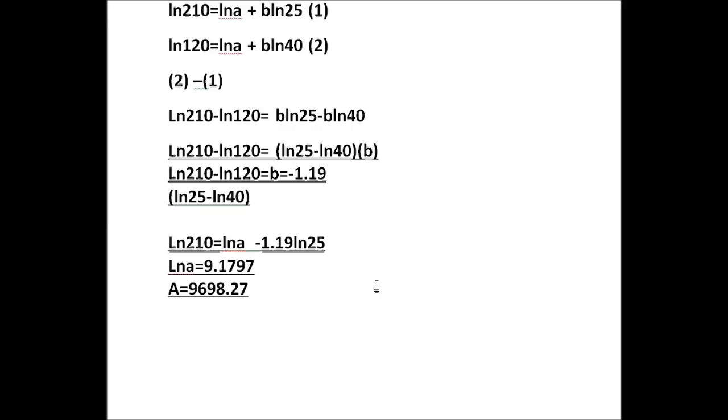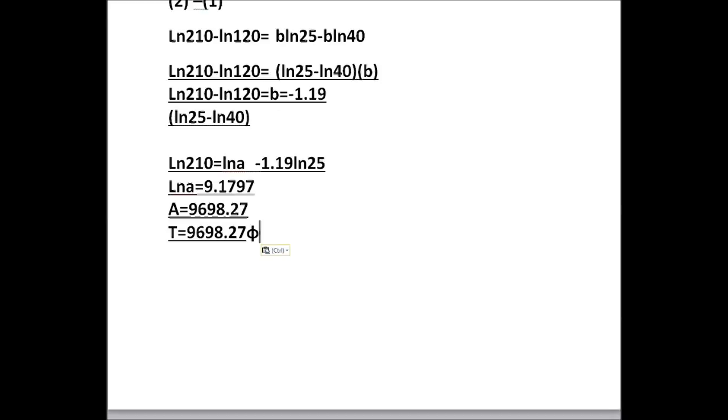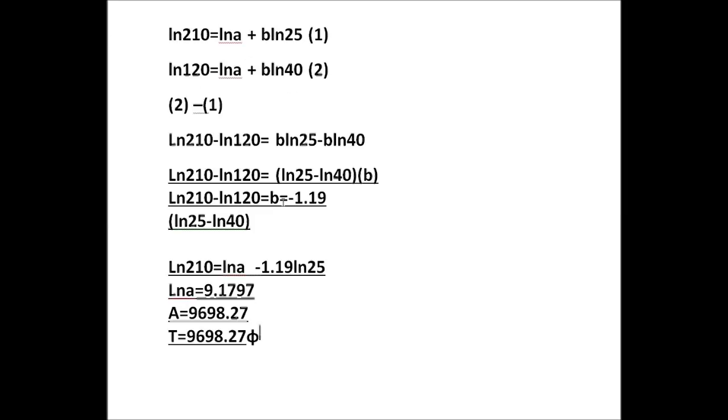So now we have found our A, and that pretty much is question part A done. We should finish writing the original equation. The original equation was 9698.27 phi to the power of our B that we found. In this case, the B was negative 1.19. Now this is obviously not the correct number of sig figs. They gave us numbers with three numbers or two, so we could probably simplify this down. Yeah, this would be precise enough.